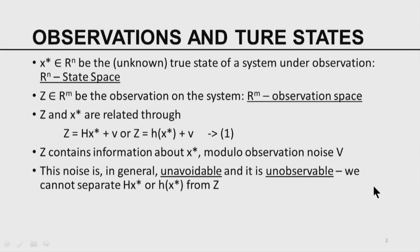If you want to know the true state of mother nature, you can only sense it through devices. The devices output Z; the input of the devices is x star. So Z contains information about the true state x star, but it is corrupted by additive noise. We say Z contains the information modulo the observation noise v. This observation noise is in general unavoidable.